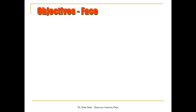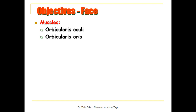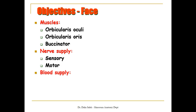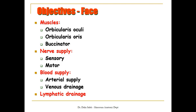If we talk about the anatomy of the face, what are the objectives of our presentation? First, I'm going to cover the muscles of the face — not all of them, but I'm going to focus on three muscles: the orbicularis oculi, the orbicularis oris, and the buccinator. Also, we will cover the nerve supply of the face, both sensory and motor, and then the blood supply including the arterial supply and the venous drainage, and finally the lymphatic drainage of the face.